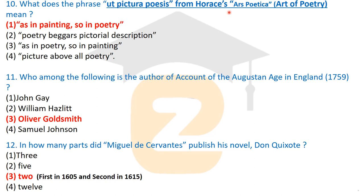Question eleven: who among the following is the author of 'An Account of the Augustan Age in England,' published in 1759? The correct answer is Oliver Goldsmith — Oliver Goldsmith was the author of this work.